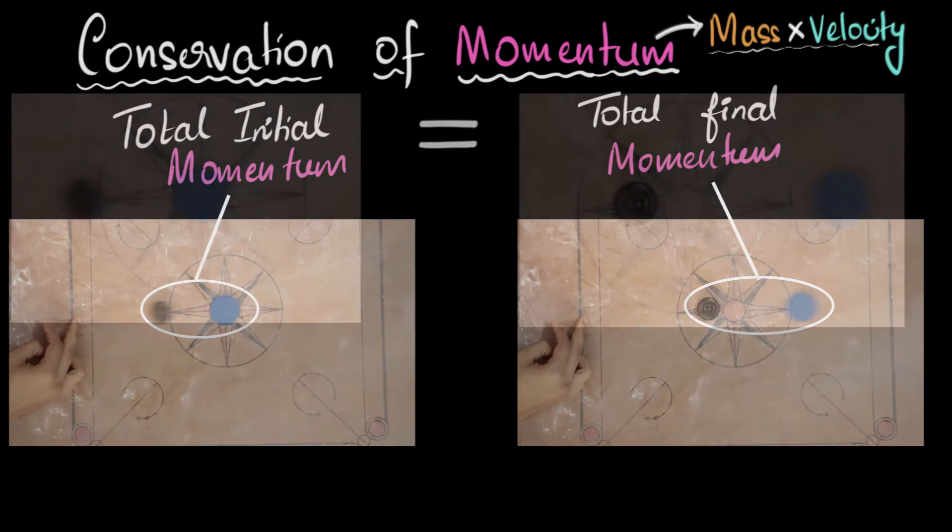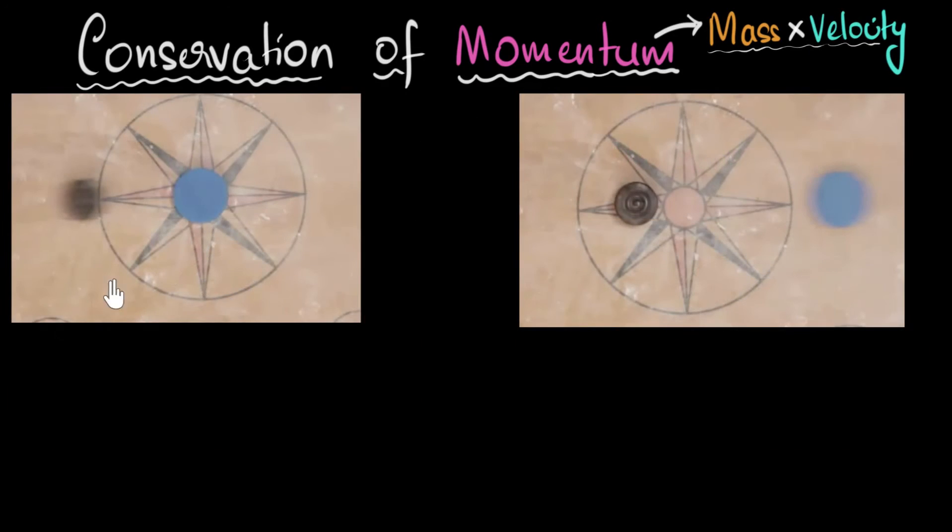So let's take an example. Let's put some numbers to this. I have zoomed in so that we can see this better. So let's say that the mass of the black coin is 10 units. Let's not worry about the units. Let's keep things simple. We'll solve more rigorous problems in other videos. And let's say the blue coin has a mass of 15 units. It was a little heavier than this one. Okay, now if the black coin was coming in with a velocity of say six units, the question is with what velocity would the blue coin take off after collision?